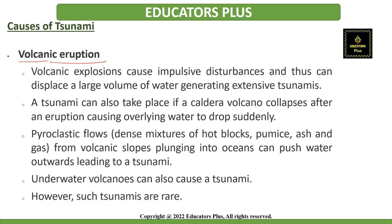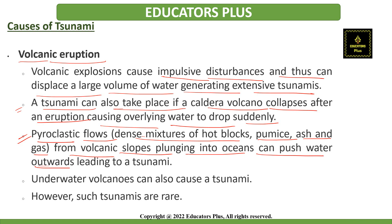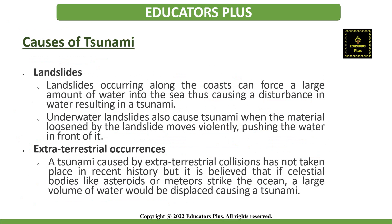The next cause is volcanic eruption. Volcanic explosions cause impulsive disturbances and can displace a large volume of water, generating extensive tsunamis. A tsunami can also occur if a caldera volcano collapses after an eruption, causing overlying water to drop suddenly. Pyroclastic flows — dense mixtures of hot blocks, pumice, ash, and gas — plunging from volcanic slopes into oceans can push water outwards leading to a tsunami. Underwater volcanoes can also cause a tsunami, though such tsunamis are very rare.